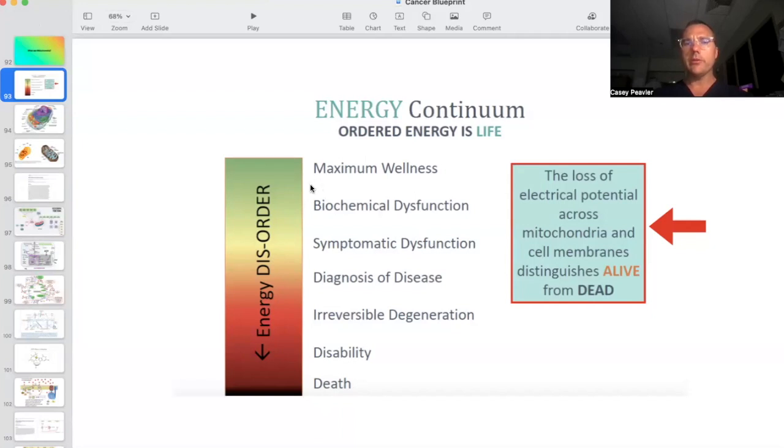However, a lot of us, especially in this day and age, live somewhere here in the middle. Sadly, as the years go on and modern life starts to take over, it seems like the majority of the population is going down to the lower areas of this graph, where we have diseases, irreversible degeneration, disability, and premature death. So energy is life. And again, I want to reiterate that energy originates in this important organelle called the mitochondria.